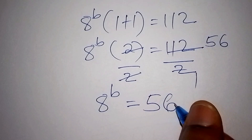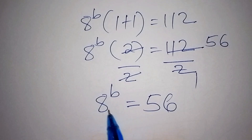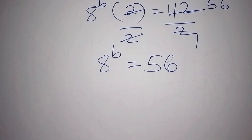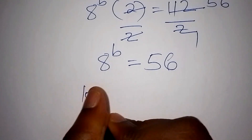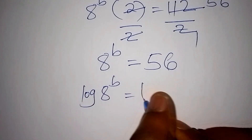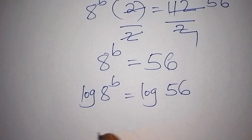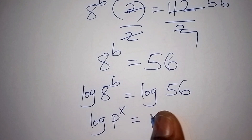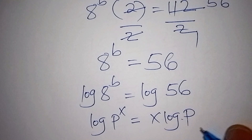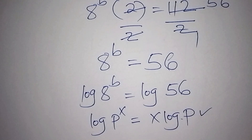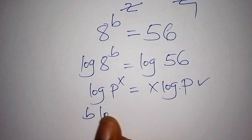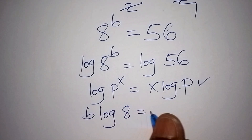So now we have 8 to the power of b equals 56. How do we find the value of b? We need to introduce the log. We shall have log of 8 to the power of b equals log of 56. Recalling that log of b to the power of x equals x times log of b, we get b times log 8 equals log of 56.